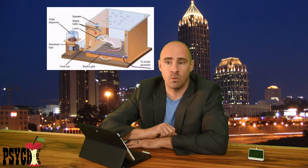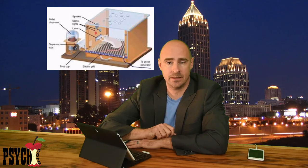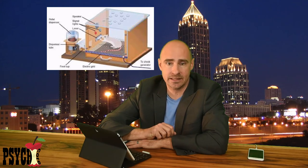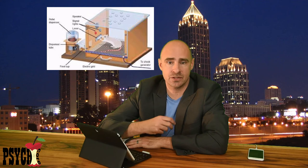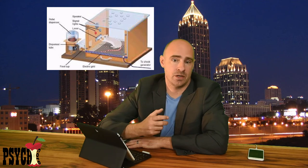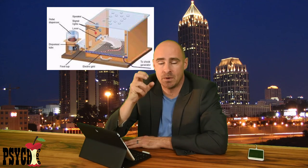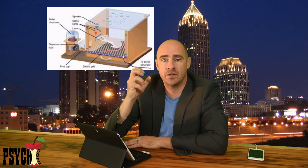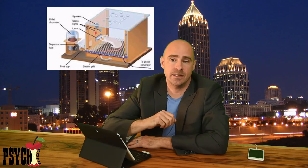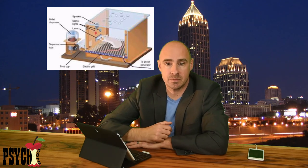In an operant chamber, a rat will often wander around and seek things out, and they'll get accidentally reinforced for some weird behavior, and that weird behavior ends up sticking. Then they will repeat that, even though we were not intending to reinforce the animal for that particular act.